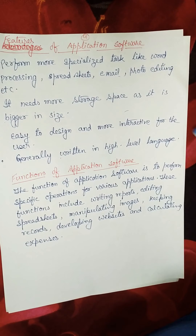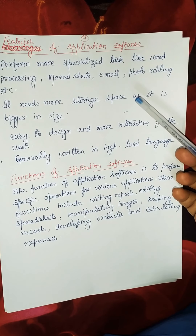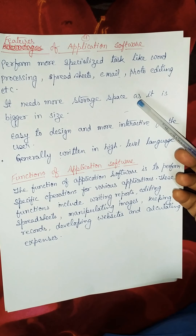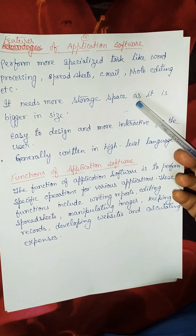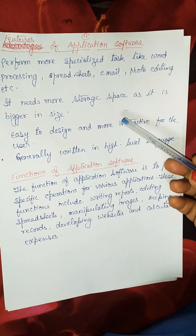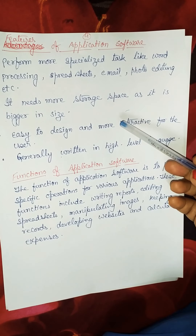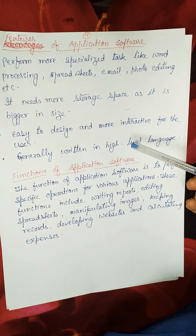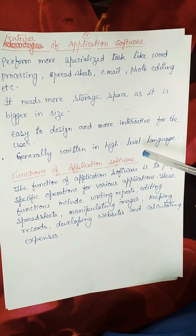Features of application software: it performs more specialized tasks like word processing, spreadsheets, email, photo editing, etc. It also needs more storage space as it is bigger in size. It is easy to design and more interactive for the user. It is generally written in high-level language.